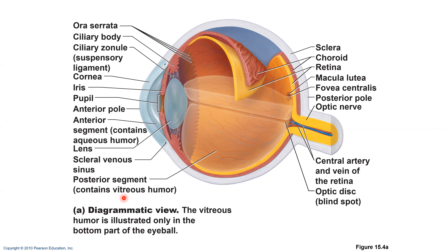The pupil can also dilate because of emotional state — if a subject is appealing to you, your pupils dilate. If you're on a date and that person likes you, chances are their pupils are dilated. Dilated pupils look more appealing to people. We also dilate in dim light — that's why a candlelit dinner in low light causes our pupils to dilate and we look more attractive to each other.